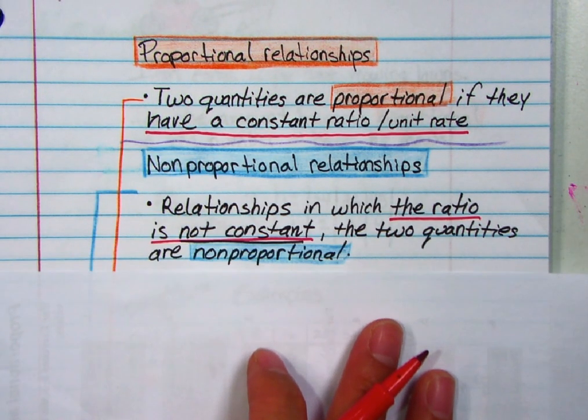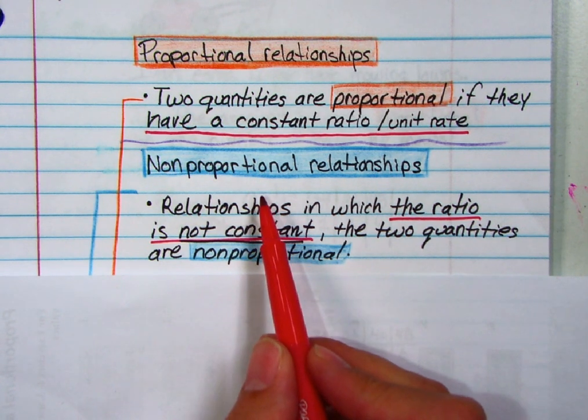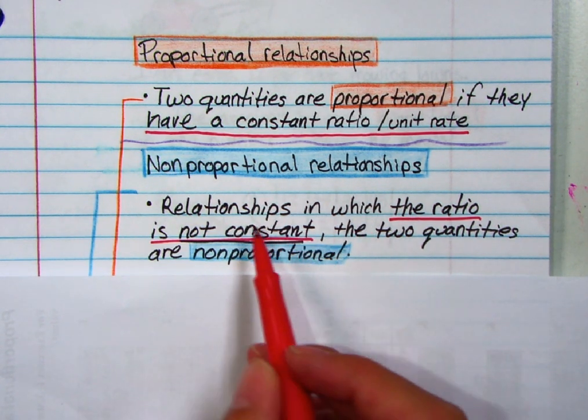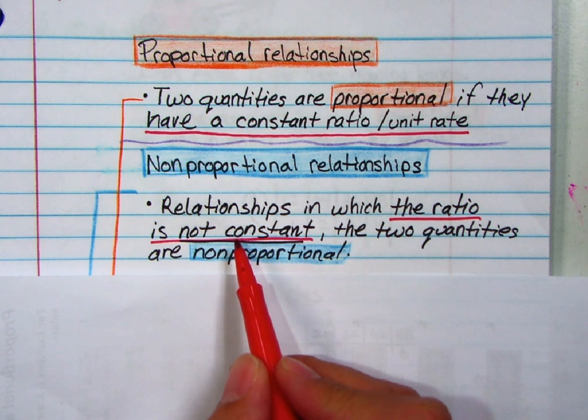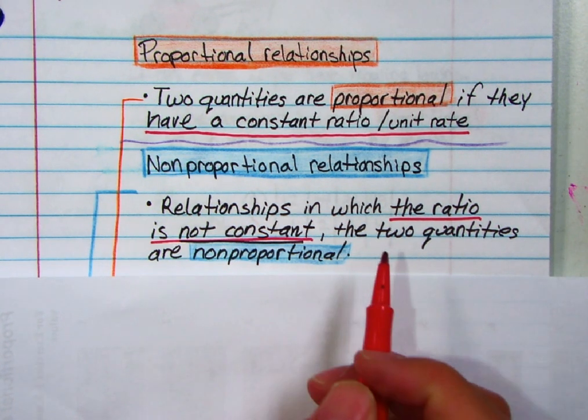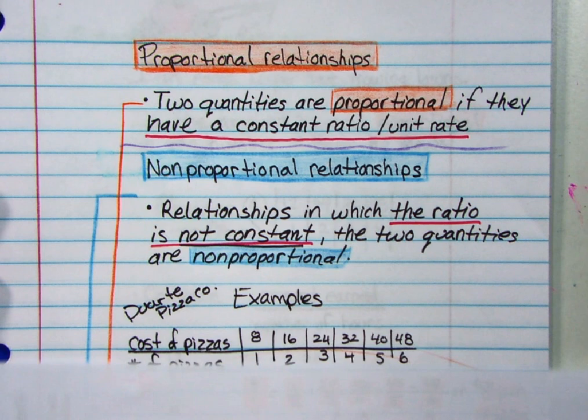So then that goes to tell you that a non-proportional relationship, that's relationships where the ratio between the two quantities is not constant. So it's not proportional. Non-proportional, as they would say.